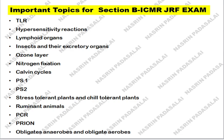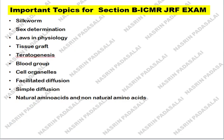Next, know about ruminant animals — which animals belong to ruminant and non-ruminant categories. Next, PCR is highly important — know about each type of PCR, like what kind of PCR is used for COVID detection. Know about PDR and PDR diseases. Next, know about obligate anaerobic microorganisms and obligate aerobic microorganisms. These are the important topics you need to cover for the ICMR-JRF examination. Thank you friends, thanks for watching this video.